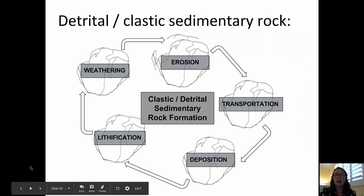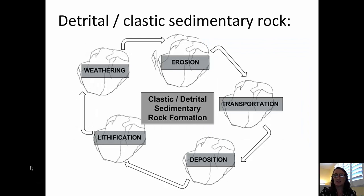Let's talk first about detrital or clastic sedimentary rocks. There is a cycle of formation for these rocks and it begins with the weathering of some original earth materials. That weathered material is then eroded away, transported, and deposited.